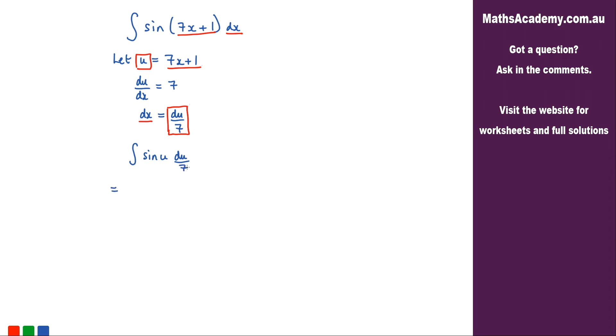Let's deal with that fraction there, that 1 over 7, let's bring that outside the integral. So 1 over 7, we've got the integral of sine of u with respect to u, and that's a very simple integral.